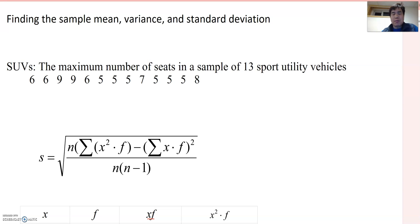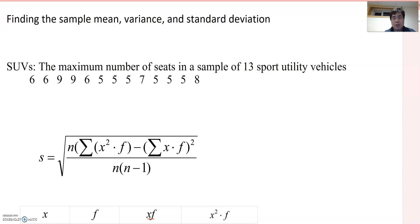So look at this example. The maximum number of seats in a sample of 13 sport utility vehicles: 6, 6, 9, 9, 6, 5, 5, 5, 7, 5, 5, and 8. As you see in this data set, many data are repeating. Before, in the previous example, all the data was non-repeating. But this time, many data are repeating more than two times — even five or six different times.